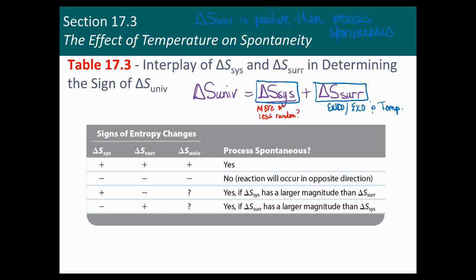The first scenario: if delta S of the system is positive — becoming more random — and the surroundings are also becoming more random because it's exothermic, then the process is always spontaneous. A good example of an always spontaneous process would be combustions — exothermic processes where you're burning stuff and making a whole bunch of gas molecules.